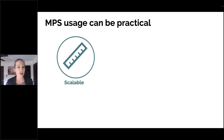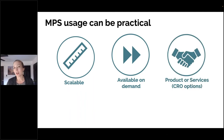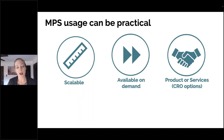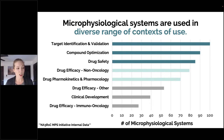Neurospheroids can be in a 96-well plate, so you can have many many replicates. They often can be available on demand — we're working with developers that can get these systems going pretty quickly. Similar to animal research, some groups allow you to purchase their MPS and do the experiments yourself, while some operate as CROs where they will actually run the experiments for you. They're also used in a diverse range of contexts of use: drug safety, target identification, drug efficacy, pharmacokinetics and pharmacology, clinical development, and compound optimization.